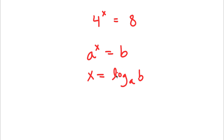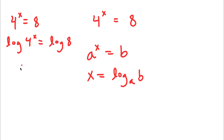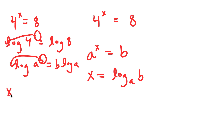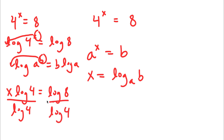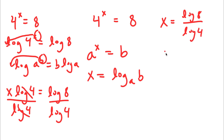I can actually prove this as well. Starting with 4 to the power of x is equal to 8, I can take the log on both sides: log of 4 to the power of x is equal to log 8. If I have something in the form log a to the power of b, I can move the exponent to the front, so this equals b times log a. So I can move x to the front: x times log 4 is equal to log 8. Dividing both sides by log 4, I have x is equal to log 8 over log 4, which can be written as log base 4 of 8.